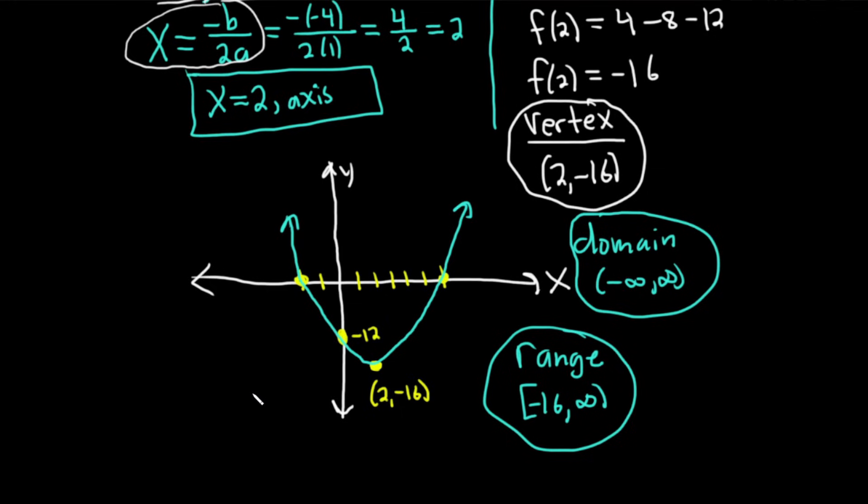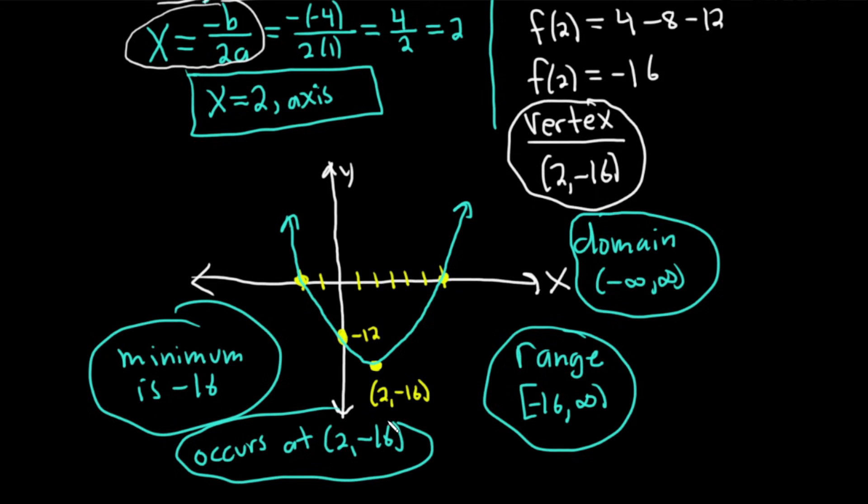And as far as the minimum, there's a minimum. Minimum is the smallest y value. So the minimum is -16. -16 is the smallest y value. It occurs at the vertex. So it occurs at (2, -16). Just extra knowledge. That's where it happens. The actual minimum value is -16, but it occurs at (2, -16).